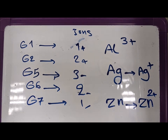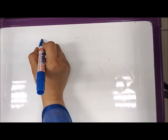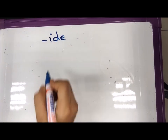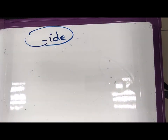When non-metals become ions, the name of the ion changes — the ending becomes '-ide'. For example, sulfide, oxide, nitride. So you put '-ide' at the end for the non-metal ions.